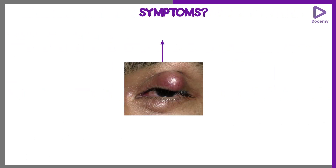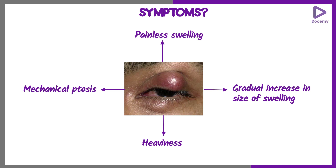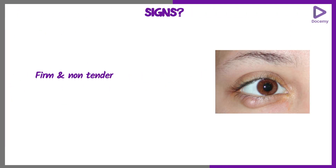The symptoms: you have to keep in mind this is a painless swelling which gradually increases in size. The patient will have some heaviness in the lids. If it is in the upper eyelid, you can get mechanical ptosis. On examination, there will be a firm and non-tender swelling away from the lid margin.